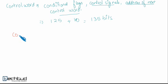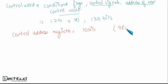For control address register we require 10 bits to address 980 clock cycles. So answer for given question is 135 bits for control word and 10 bits for control address register.